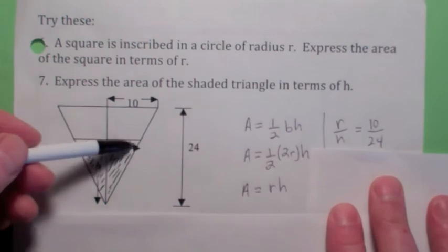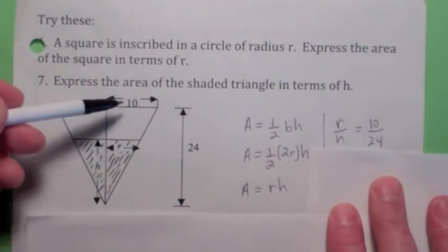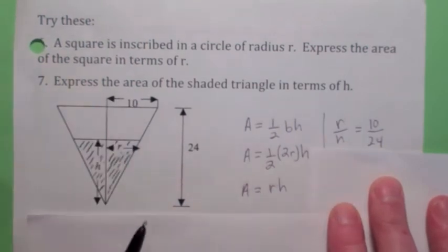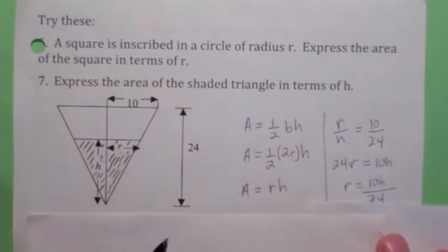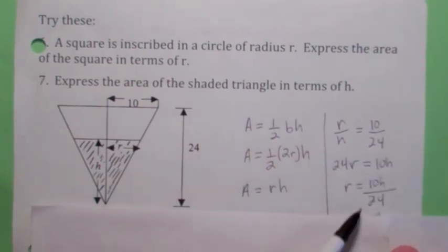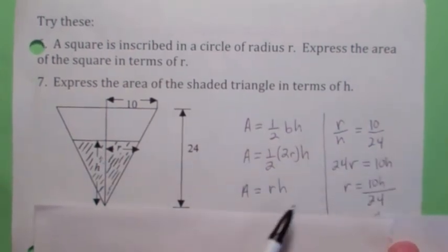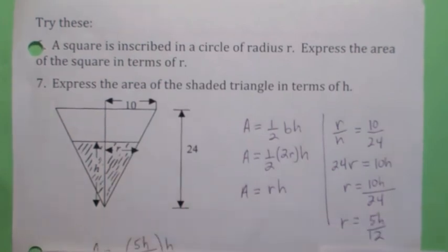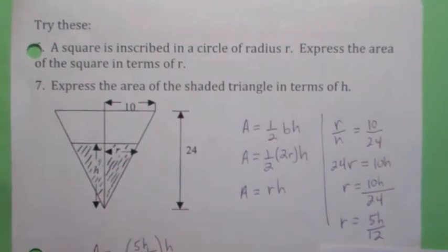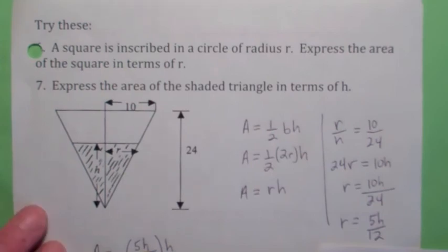Well, you could say r is to h as 10 is to 24. See? So what are we trying to do? We're trying to get rid of r. So we're going to solve this for r. And then wherever there's an r, you could replace... So r equals this. So then wherever there's an r, you could replace it with 5h over 12. So you get 5h squared over 12. That's the answer.